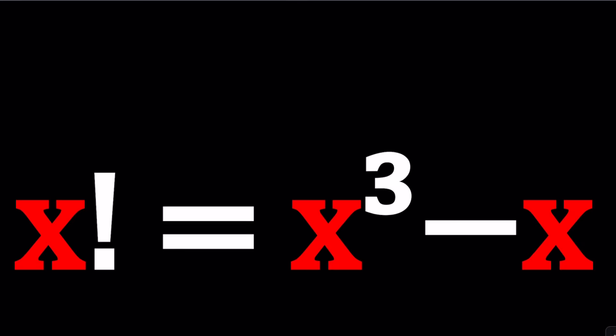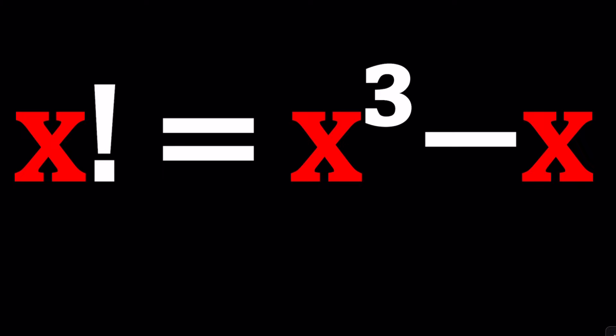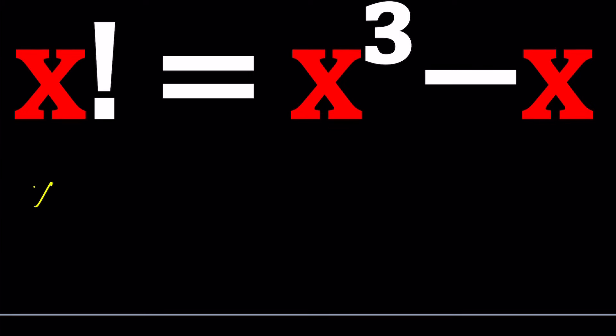So we have x factorial equals x cubed minus x. To be able to solve this problem, first of all, I'm going to factor both sides. Obviously, x factorial can be written as x times x minus 1 factorial, and x cubed minus x can be factored into x times x squared minus 1.